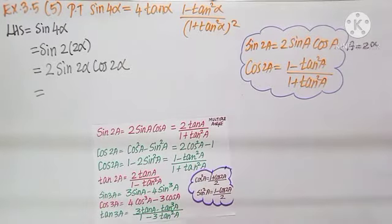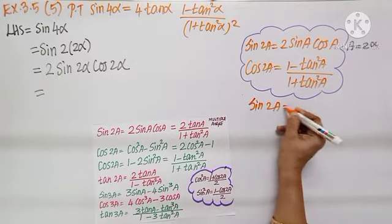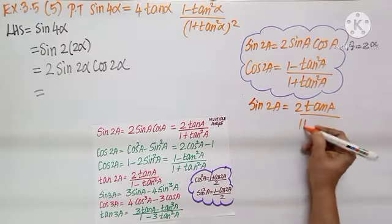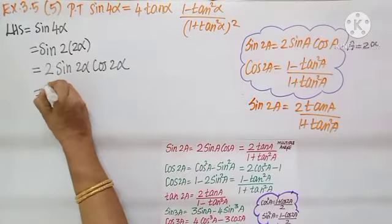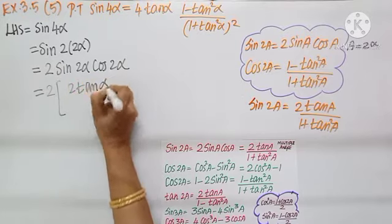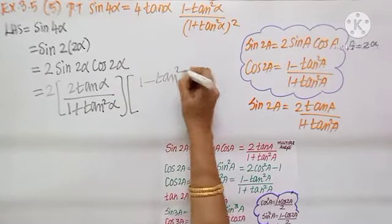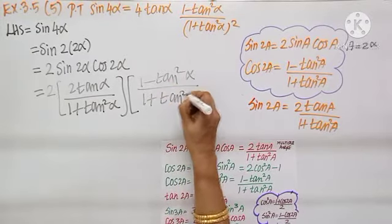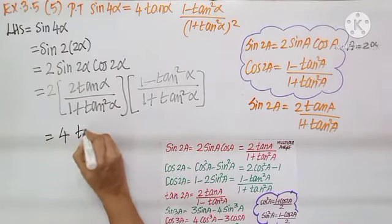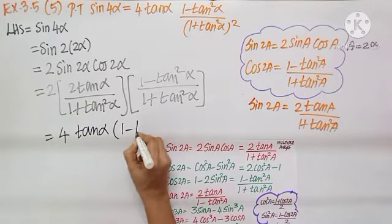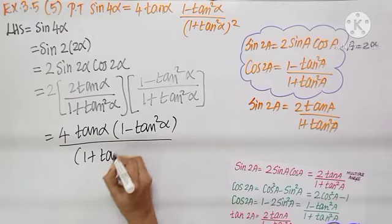What is sin 2α? We need to substitute the formula using tan because the RHS contains only tan. The sin 2a formula is 2 tan a by 1 plus tan² a. Substituting for sin 2α and cos 2α: 2 into 2 tan α by 1 plus tan² α, and cos 2α is 1 minus tan² α by 1 plus tan² α. Multiplying, we get 4 tan α into 1 minus tan² α divided by 1 plus tan² α into 1 plus tan² α.